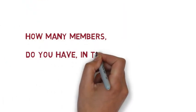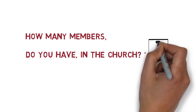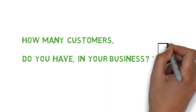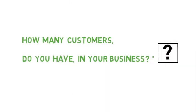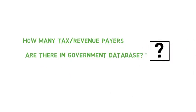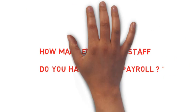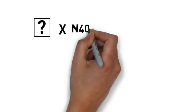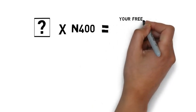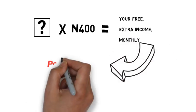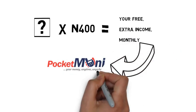How many church members do you have in the congregation? How many students do you have in your school? How many customers do you have in your business? How many taxpayers do you have in the government database? How many employees do you have in your payroll? Kindly multiply that figure by 400 Naira.